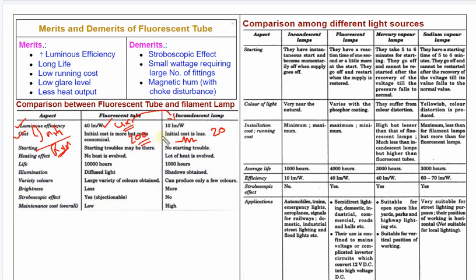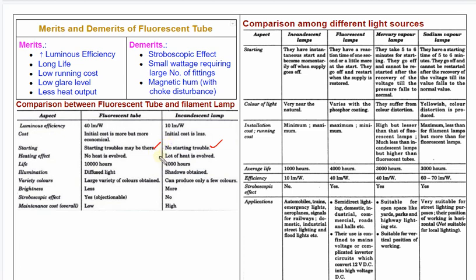Comparing useful operating life: the incandescent lamp starts easily and instantaneously, but the fluorescent lamp requires a starter. There is a flickering effect when starting the fluorescent lamp, which is a disadvantage.